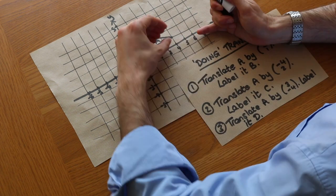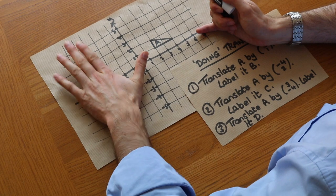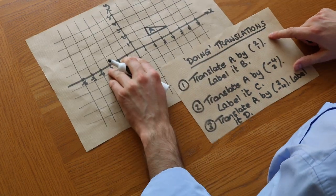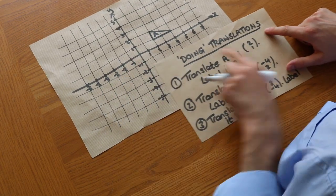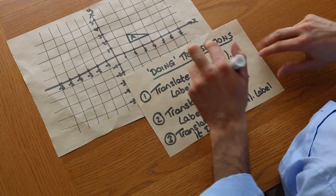Now a translation is when we just shift the shape without rotating or enlarging it. So it's just a movement of the shape without otherwise changing it. And the way we describe a translation is using a vector. So a vector is just a way of describing a movement.